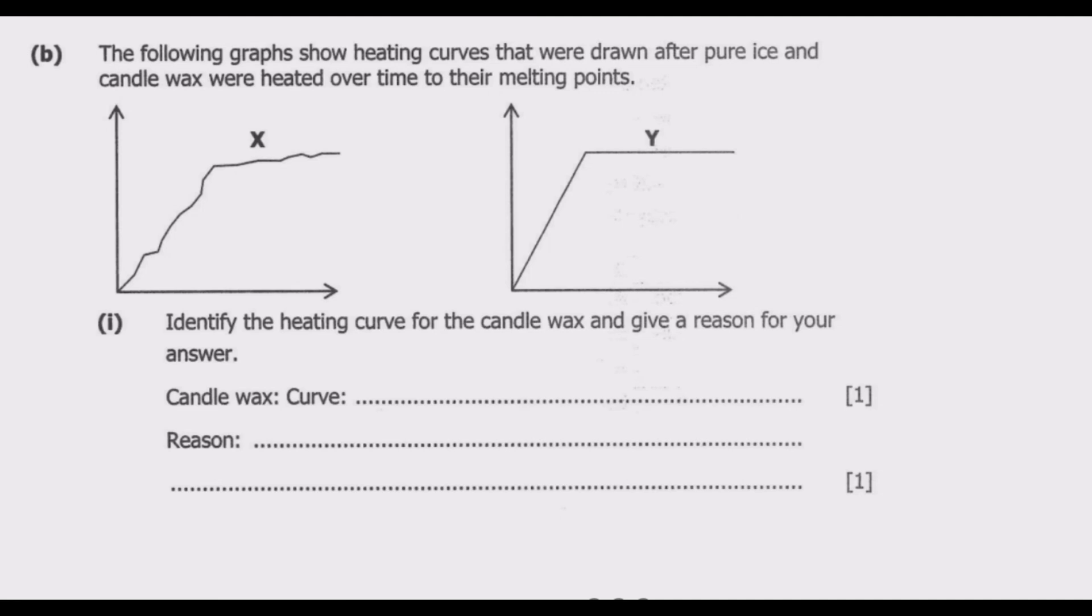Question B(b): The following graphs show heating curves that were drawn after pure ice and candle wax were heated over time to their melting points. Identify the heating curve for the candle wax and give a reason for your answer. The question is: which one is for pure ice and which one is for candle wax, and how do these two differ?